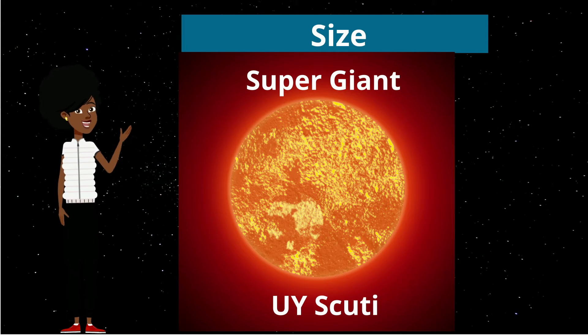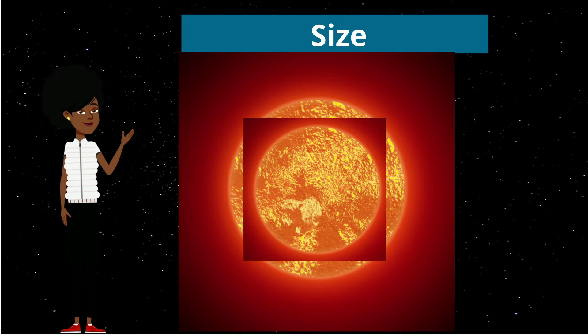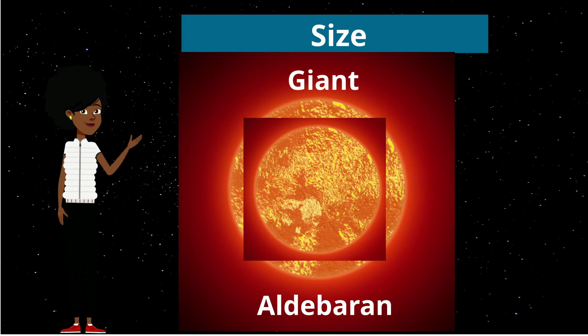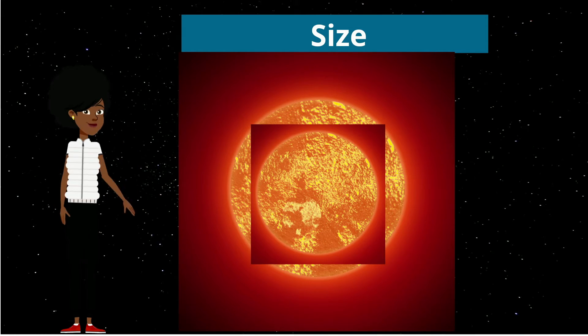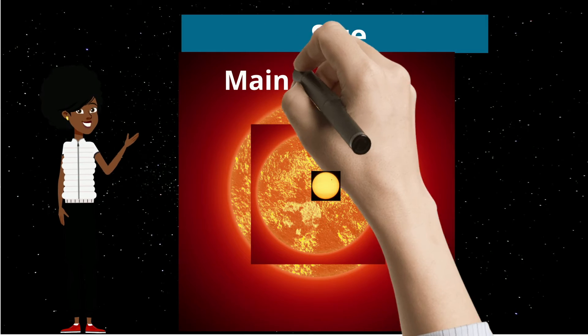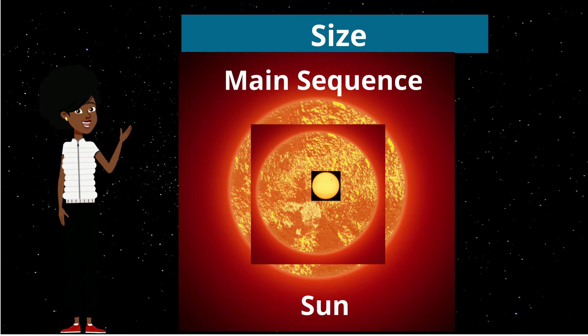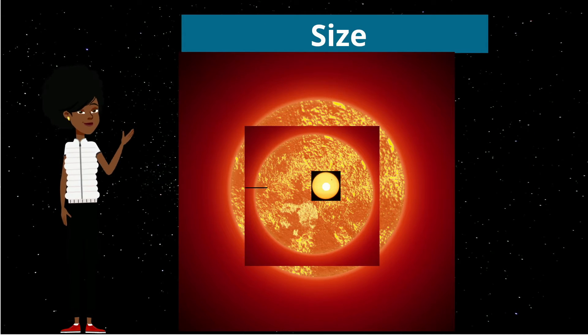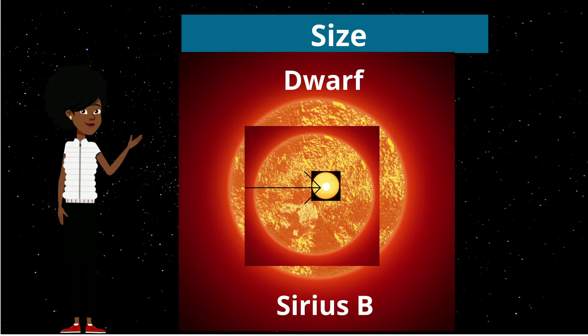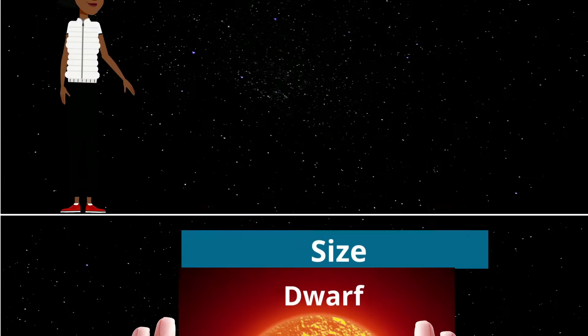This is a supergiant called UY Scuti. Here's a giant called Aldebaran. Then we have a main sequence star, like our Sun. And if you can see it, that small little white dwarf, that's Sirius B.